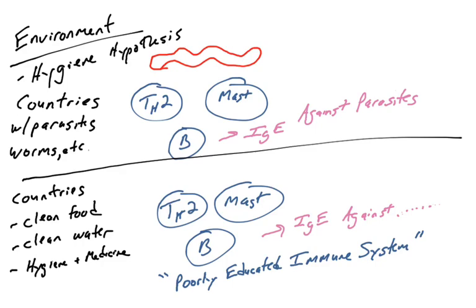It is believed that the reason for this is that these cells don't have anything to do. They don't have any parasites to attack. So instead of making IgE against parasites, they start making IgE against environmental proteins such as peanuts or pollen or cat dander. So it's suggested that these cells are poorly educated during youth, and they start making IgE against non-pathogenic molecules because they don't have any worms to attack.